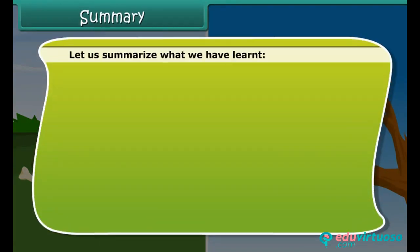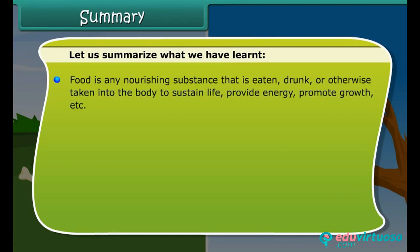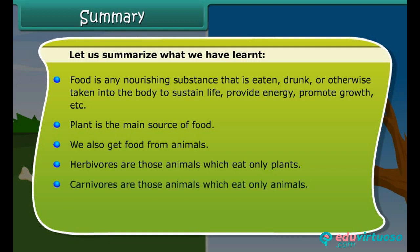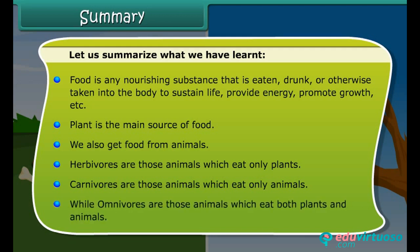Let us summarize what we have learned. Food is any nourishing substance that is eaten, drunk, or otherwise taken into the body to sustain life, provide energy, promote growth, etc. Plant is the main source of food. We also get food from animals. Herbivores are those animals which eat only plants. Carnivores are those animals which eat only animals. Omnivores eat both plants and animals.